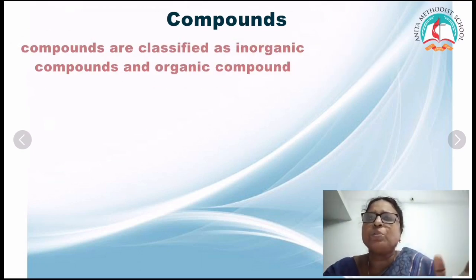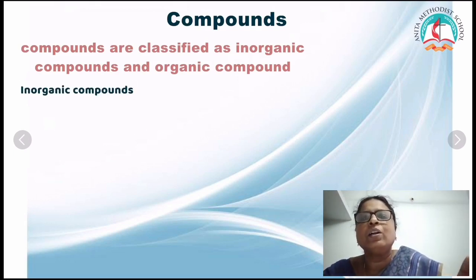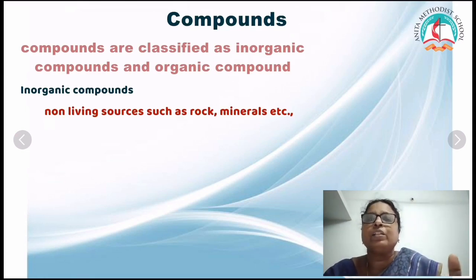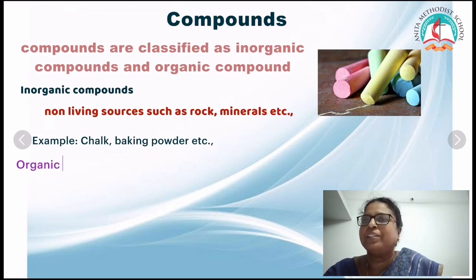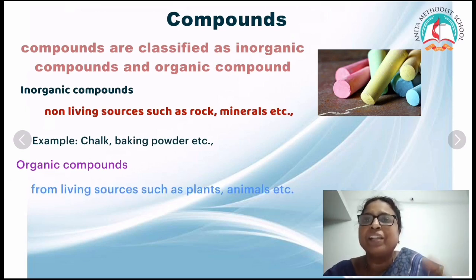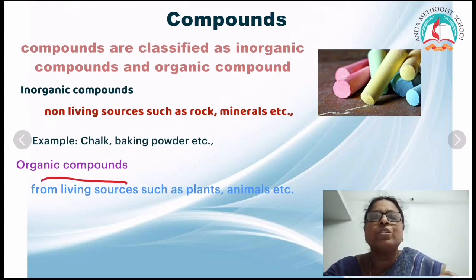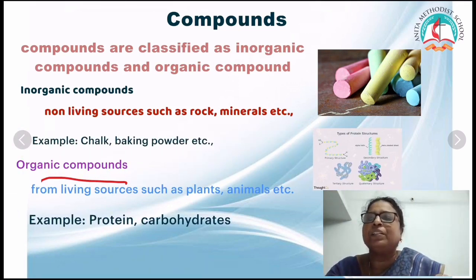Compounds are classified as inorganic compounds and organic compounds. Inorganic compounds are obtained from non-living sources such as rocks and minerals — for example, chalk and bleaching powder. Organic compounds are obtained from living organisms such as plants and animals — for example, proteins and carbohydrates.